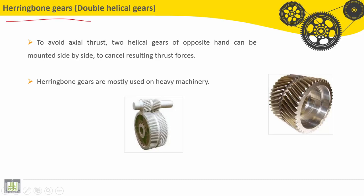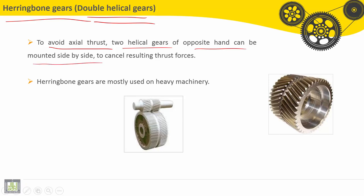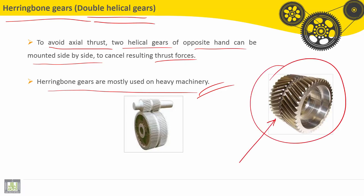Let's see now about herringbone gears, also called double helical gears. They are used to avoid axial thrusts. Two helical gears can be mounted side by side to cancel resulting thrust forces. Herringbone gears are mostly used on heavy machinery. You can see two helical gears of opposite hand, with the opposite position of the angles visible here.